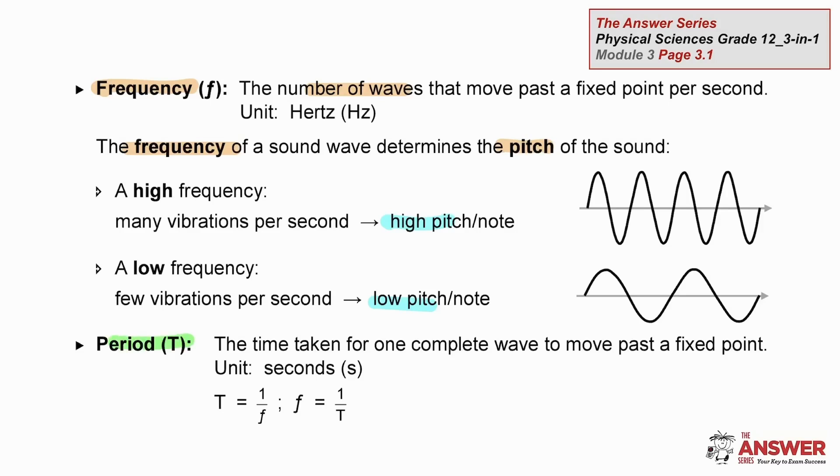Period is a time interval. It's defined as the time taken for a complete wave to pass by. These formulae relate frequency to period.